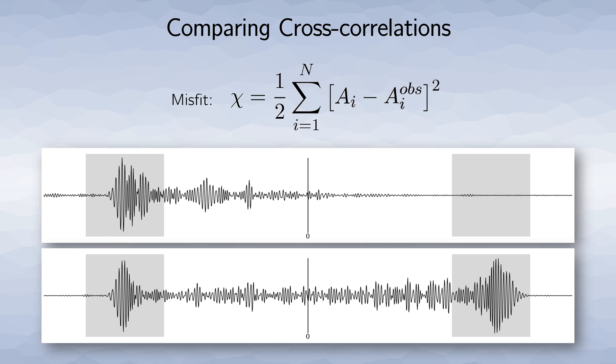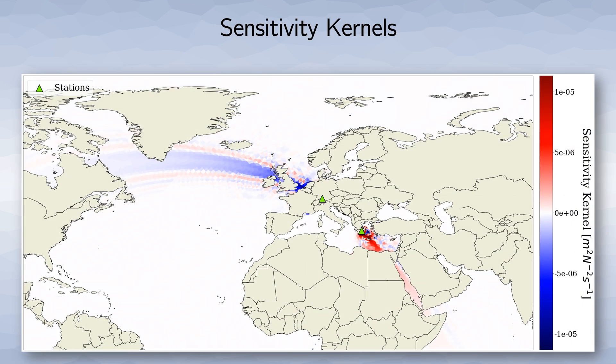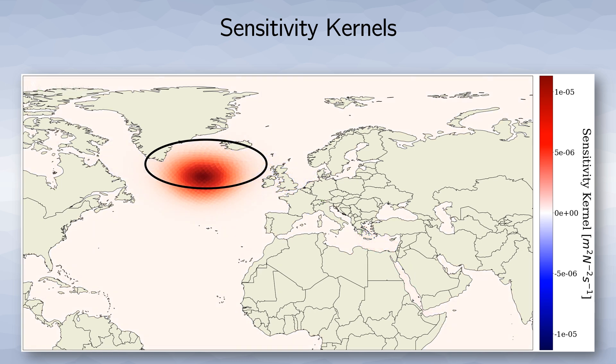By applying adjoint techniques, we can compute the finite frequency sensitivity kernel, which tells us where an increase or decrease in noise source strength will govern the more accurate model. In this synthetic example, the sensitivity kernel tells us to increase the source strength in the North Atlantic. This corresponds to where we put the dominant noise source to forward model the observed cross correlation.